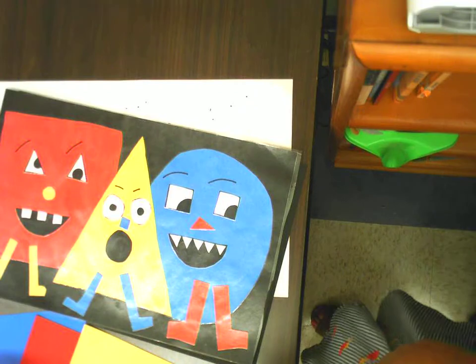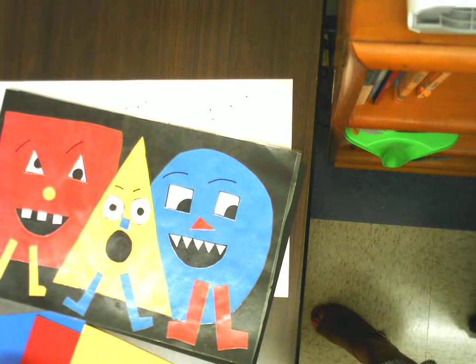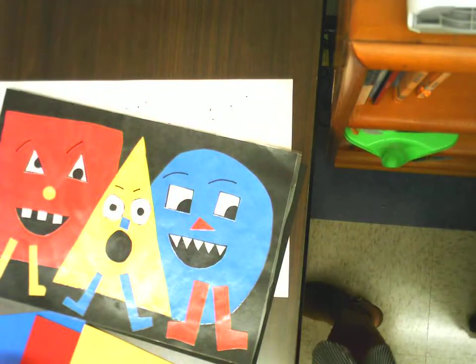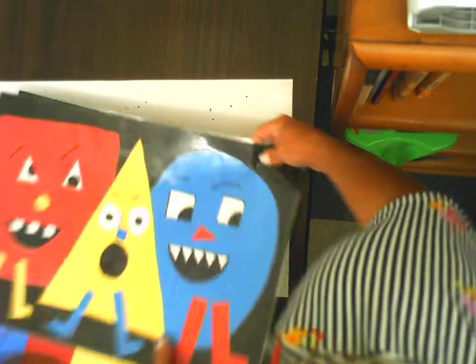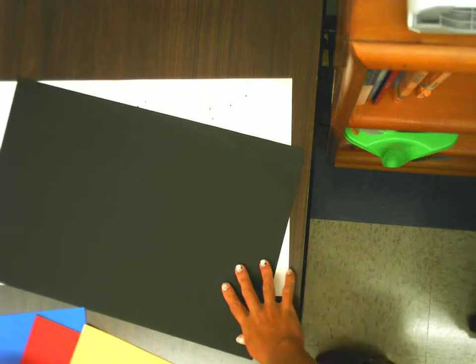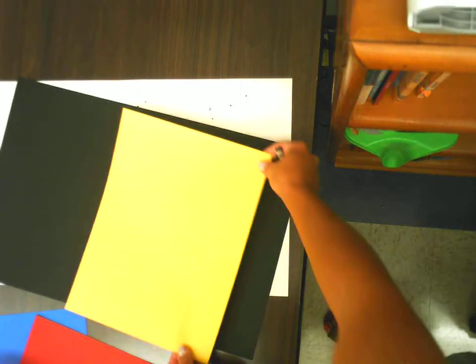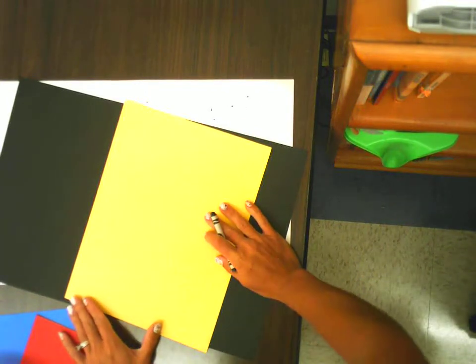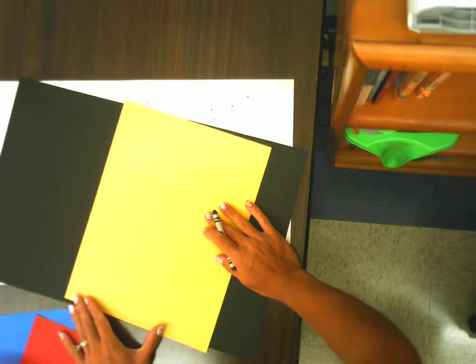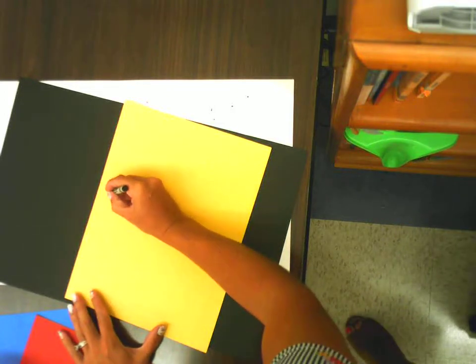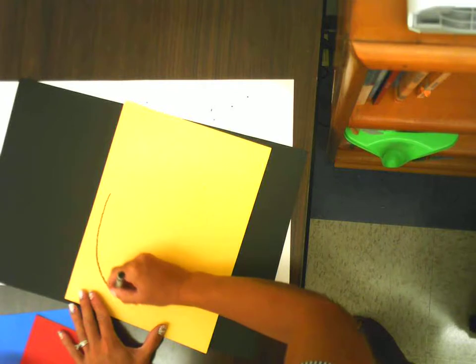Okay, we are going to get started on our shape monster lesson. Part one is creating the bodies for our shape monsters. Everybody's going to have one big piece of black paper. I want you to find your yellow piece of paper, and using your black crayon, let's start by making a large circle or oval. This is going to be our first shape monster.